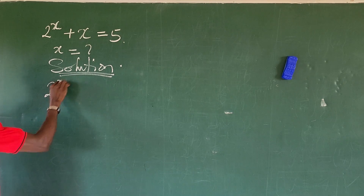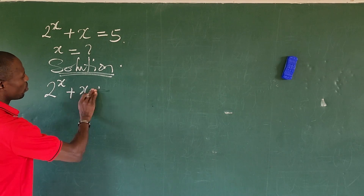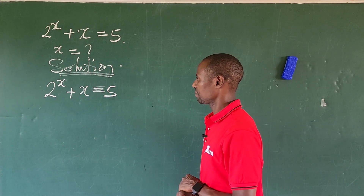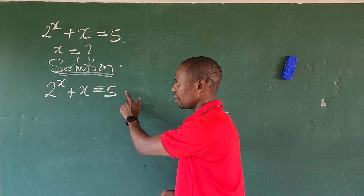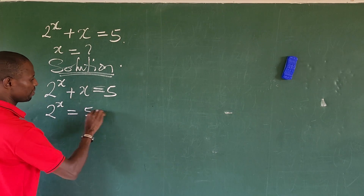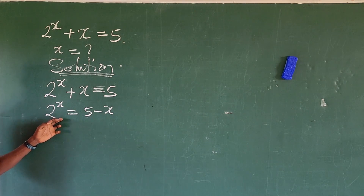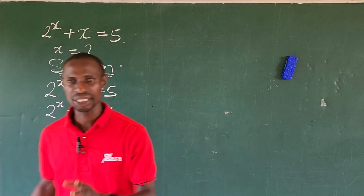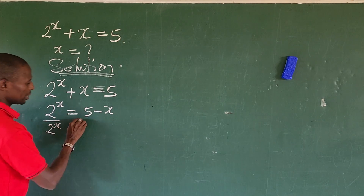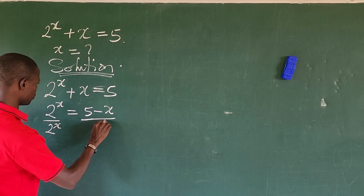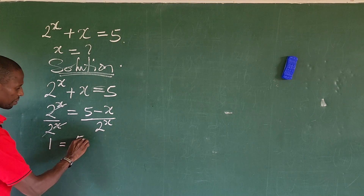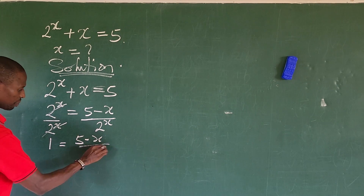We put down our question: 2 to the power of x plus x equals 5. Now I want to send this x to the other side of the equation. So that gives us 2 to the power of x equal to 5 minus x. Then we divide through by 2 to the power of x to make one side of the equation unity, giving us 1 equal to (5 minus x) all over 2 to the power of x.